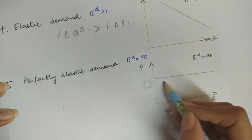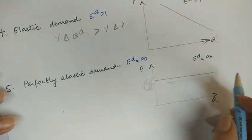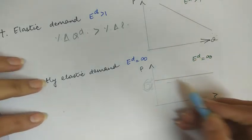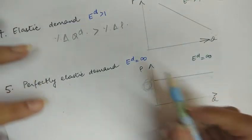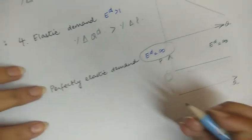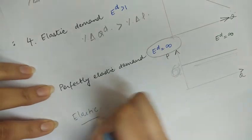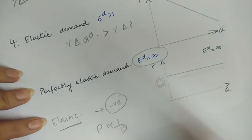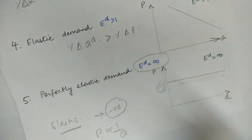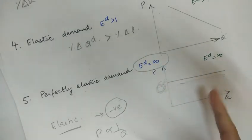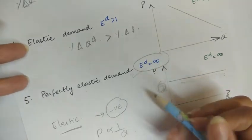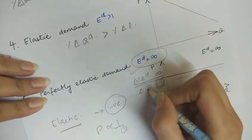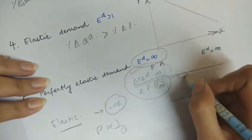In the case of perfectly elastic demand, a small or no change in price of the commodity leads to an infinite change in the quantity demanded. Even if the price change is very minute or zero, the quantity demanded changes by a very large amount. Here the elasticity of demand is infinity. Note that price elasticity of demand is always negative because the relationship between price and quantity demanded is inverse. When the reaction of quantity to price change is extremely large, the numerator — percentage change in quantity demanded — becomes infinite.